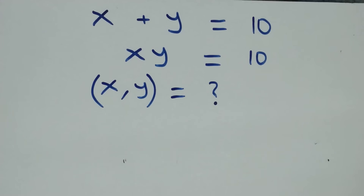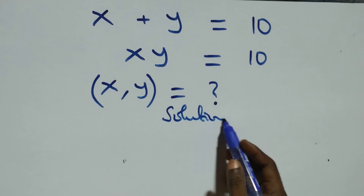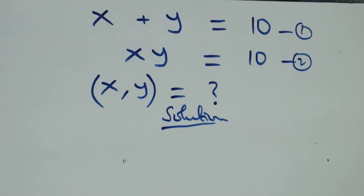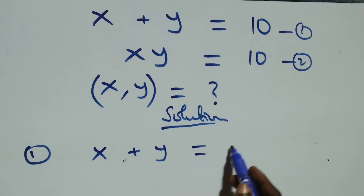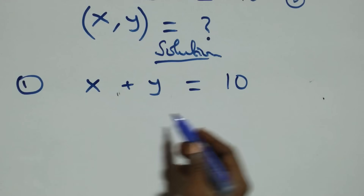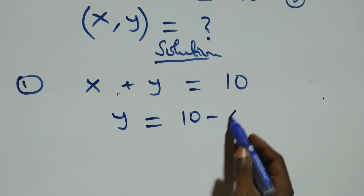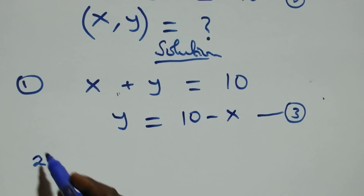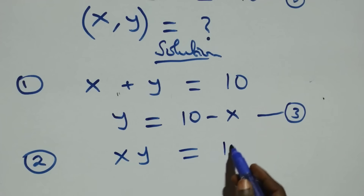Hello, you are welcome. We will solve this algebraic equation. We label the first as equation one and the second as equation two. From equation one, x plus y equals ten. We make y the subject, taking x to the other side, giving y equals ten minus x, which we call equation three.